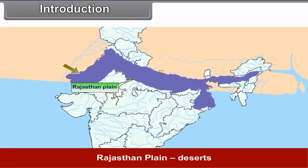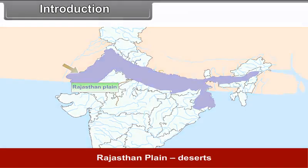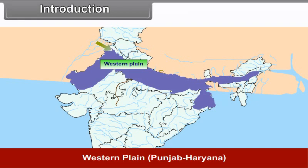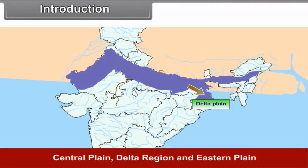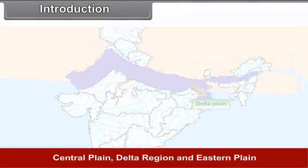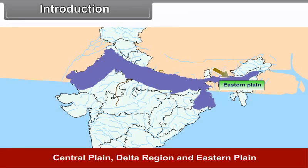This plain can be divided into 4 parts: Rajasthan Plain (Desert), Western Plain (Punjab, Haryana), Central Plain, and Delta Region and Eastern Plain.